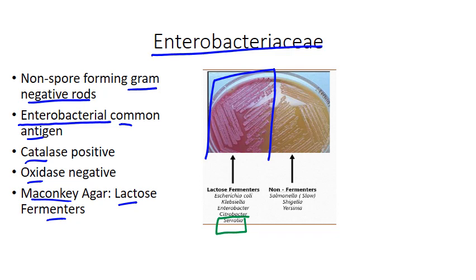So if you look 24 hours later, it might look negative and you might say that's a non-fermenter. But if you had saved it for 72 hours, you might see a nice pink color — it's just that it's Serratia and it takes a while. If you have other questions about Enterobacteriaceae, I recommend you go back and watch that video.